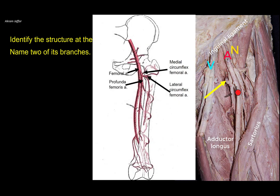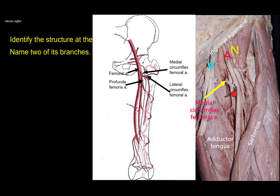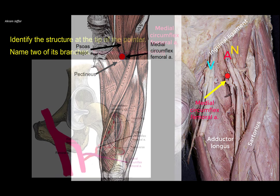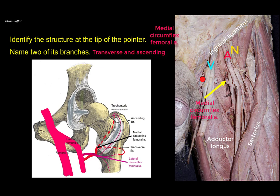It arises from its lateral aspect, but the femoral artery is pushed a little bit to the lateral side. This branch is the deep femoral artery — the profunda femoris artery. At the tip of the pointer is the medial circumflex femoral artery. The profunda femoris has a medial circumflex and a lateral circumflex. The medial circumflex femoral artery doesn't go medially but posteriorly, leaving the femoral triangle between pectineus and psoas major. It divides into a transverse branch participating in the cruciate anastomosis and an ascending branch forming the trochanteric anastomosis, which supplies the head of the femur.